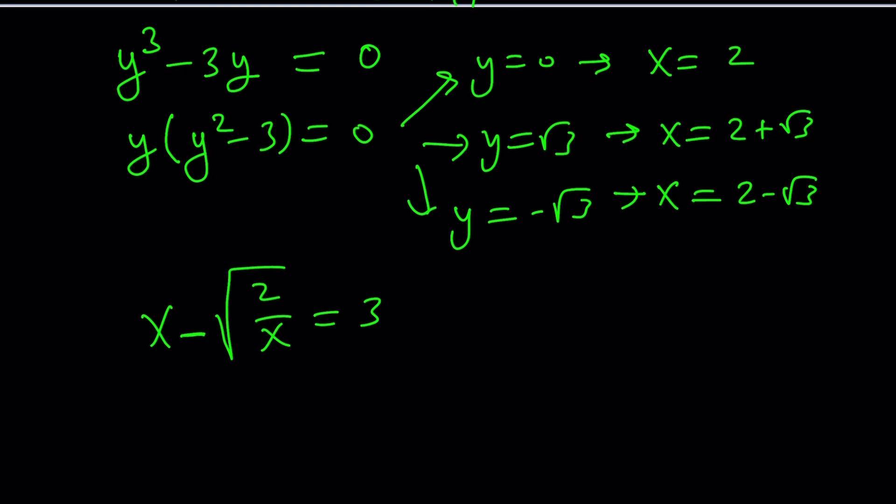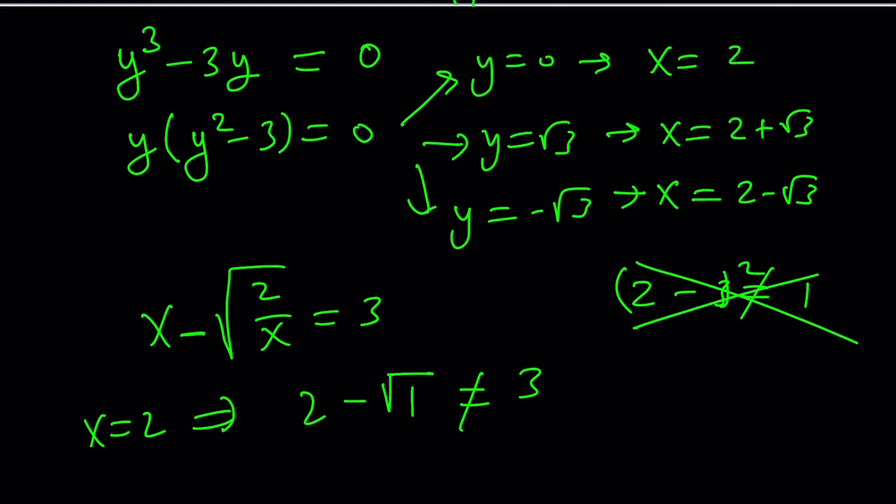For example, if x is equal to 2, plug it in real quick. That's going to be 2 minus the square root of 1, which is obviously not 3. Where does this come from? Like I said earlier, this is kind of like this, but that's not true, because if you square them, then it'll be true. That's why squaring brings in extra solutions, or should I say extraneous solutions.